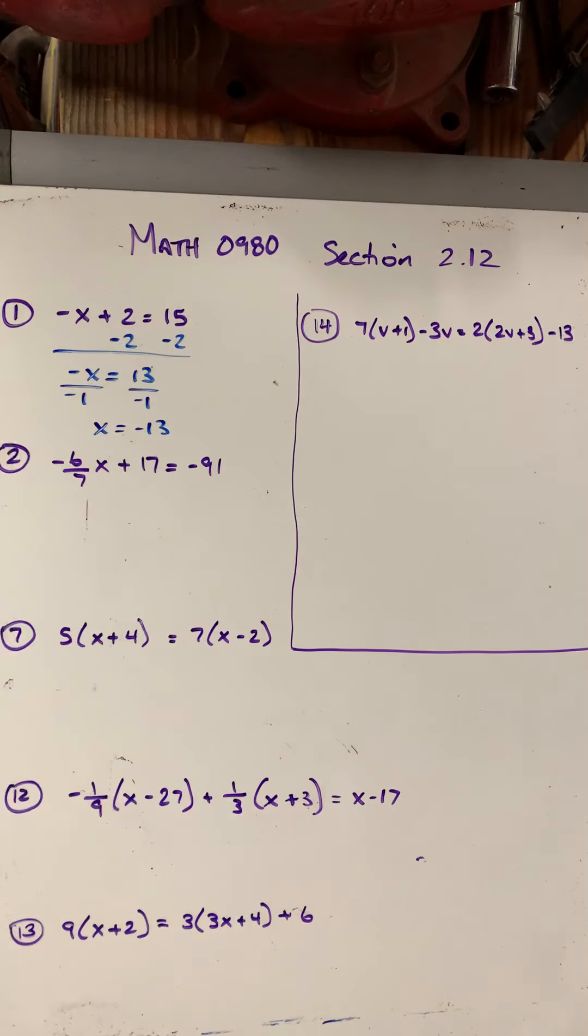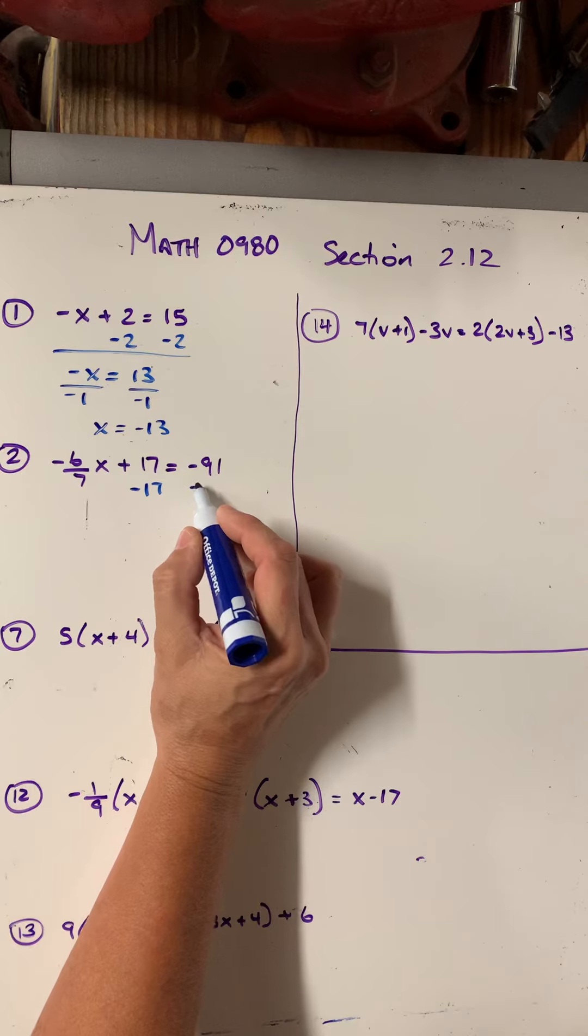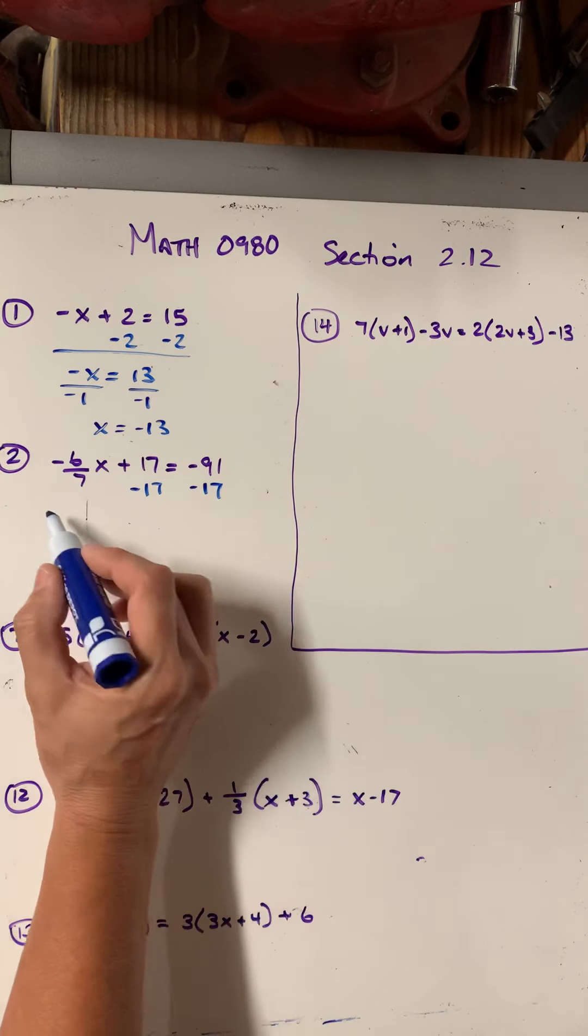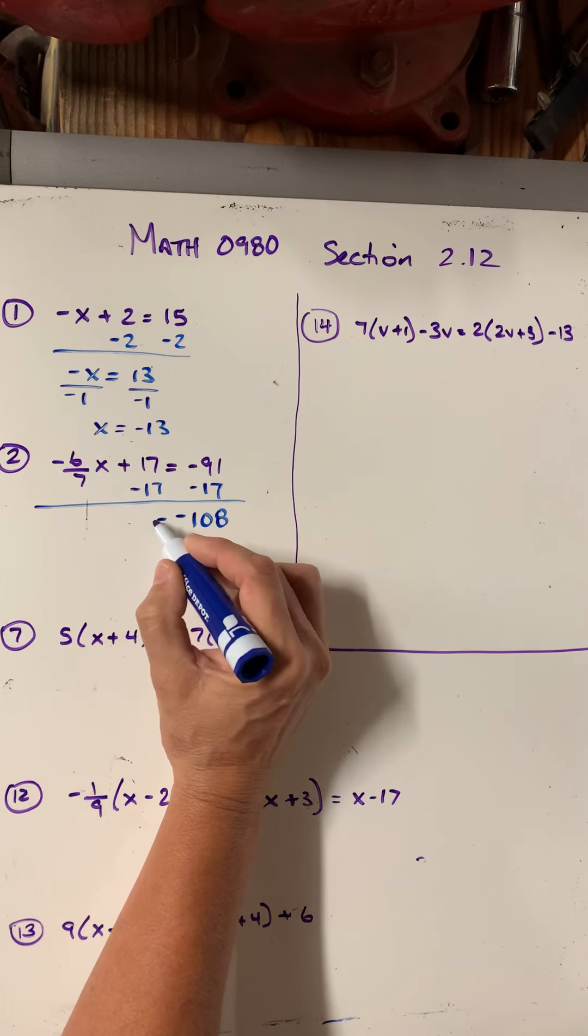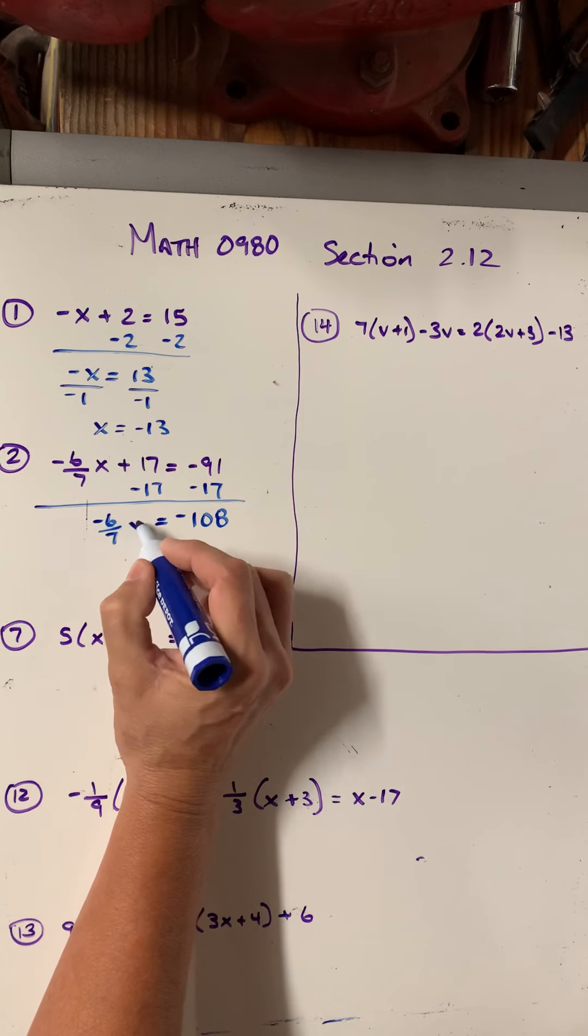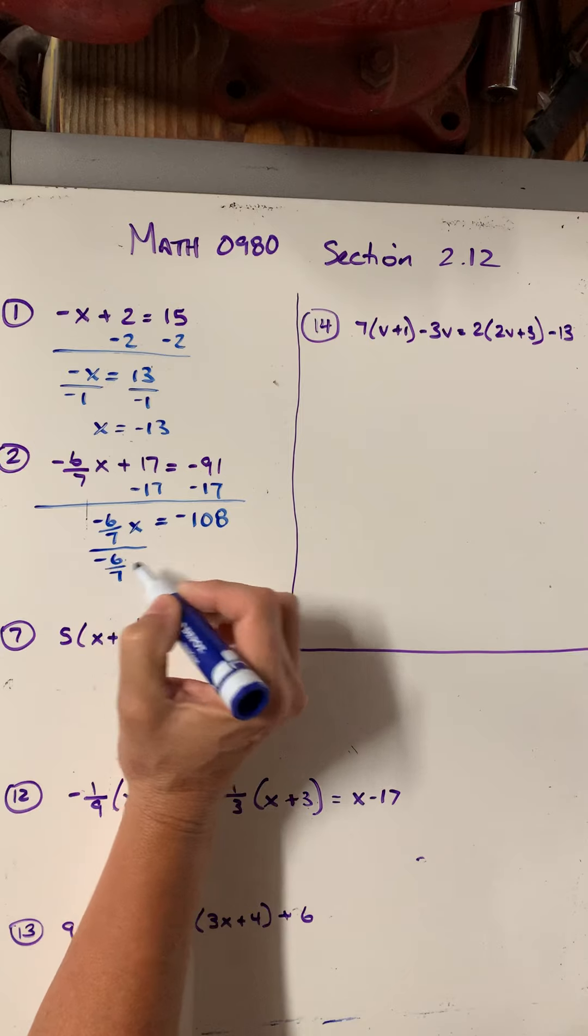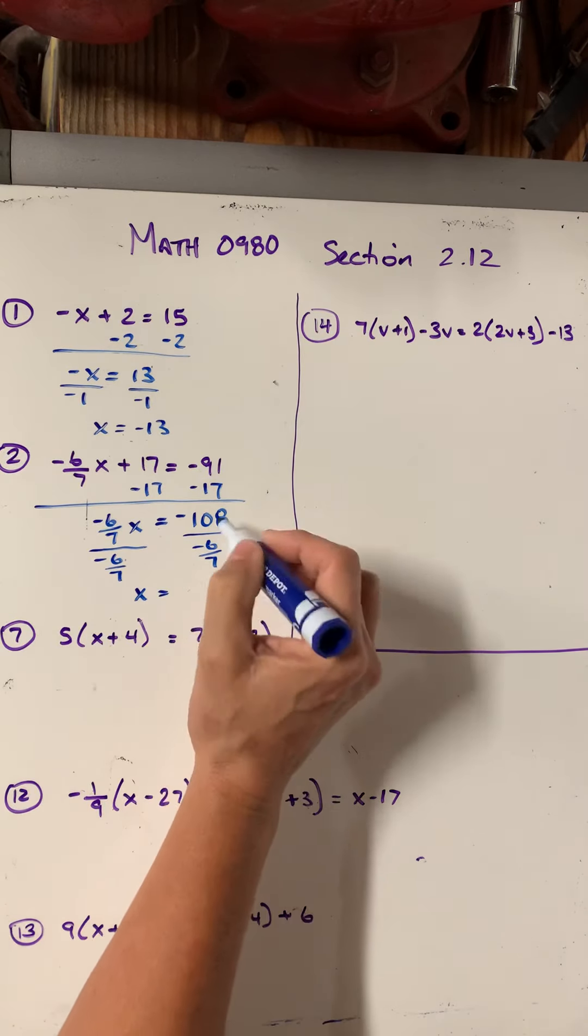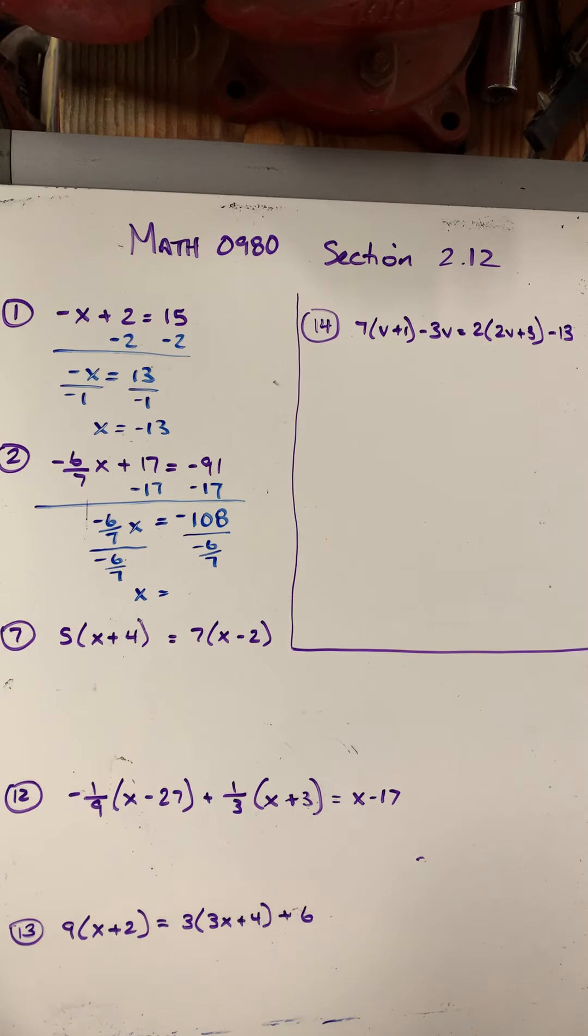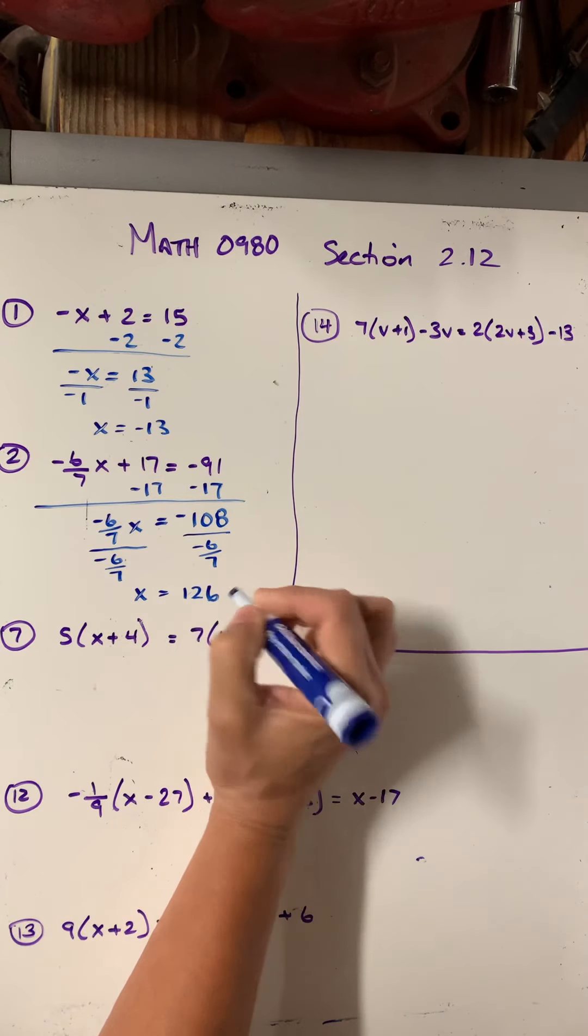Let's look at number 2. Number 2 is again a two-step question, just like number 1 was. I would start by moving the 17. So negative 91 minus 17 would be negative 108. And here I have negative 6 sevenths x. So my next step, I could divide both sides by negative 6 sevenths. And I can do this on my calculator if I need to. Negative 108 divided by negative 6 sevenths. And I should get an answer of positive 126.